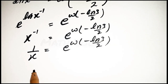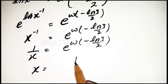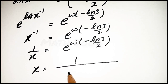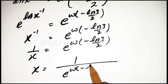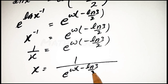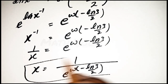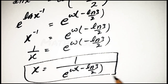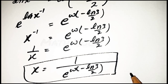Therefore x = 1 / e^(W[−ln(3)/2]). This is our final answer. Don't forget to subscribe to my YouTube channel to watch more videos like this!